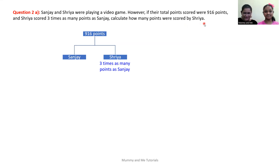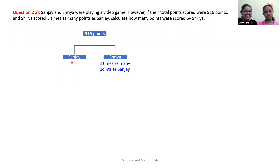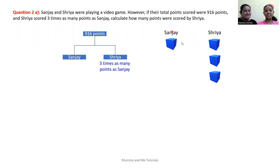What do you think Sanjay felt though? That Shreya scored more points than he did. So Sanjay and Shreya were both playing a video game. All together, they scored 916 points. What do we know so far? That Sanjay received an unknown amount, so we're going to use a box — one box for Sanjay's unknown amount.